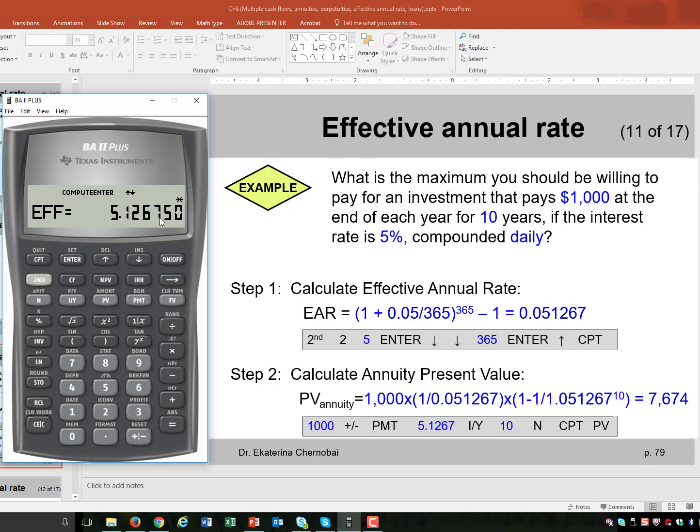5.1267 and we actually have a couple more, 50 which we don't have on the slide. So this is the effective rate.